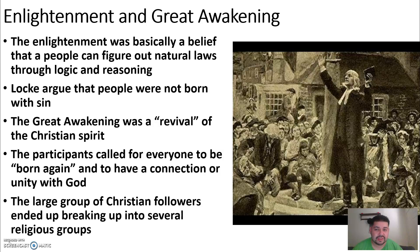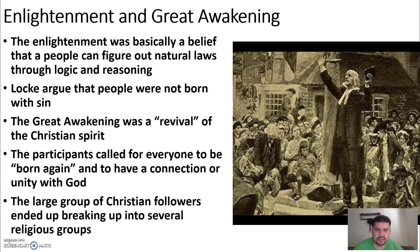Now we'll talk about two groups that emerged around this time. First, the Enlightened — these people believed that humans can figure out natural laws by thinking logically and applying reason. Basically, they believed we can figure out anything if we sit down and think about it. That means thinking through consequences: if I make this decision, what are the possible outcomes? How would someone truly react? Would you accept it if someone did that to you?